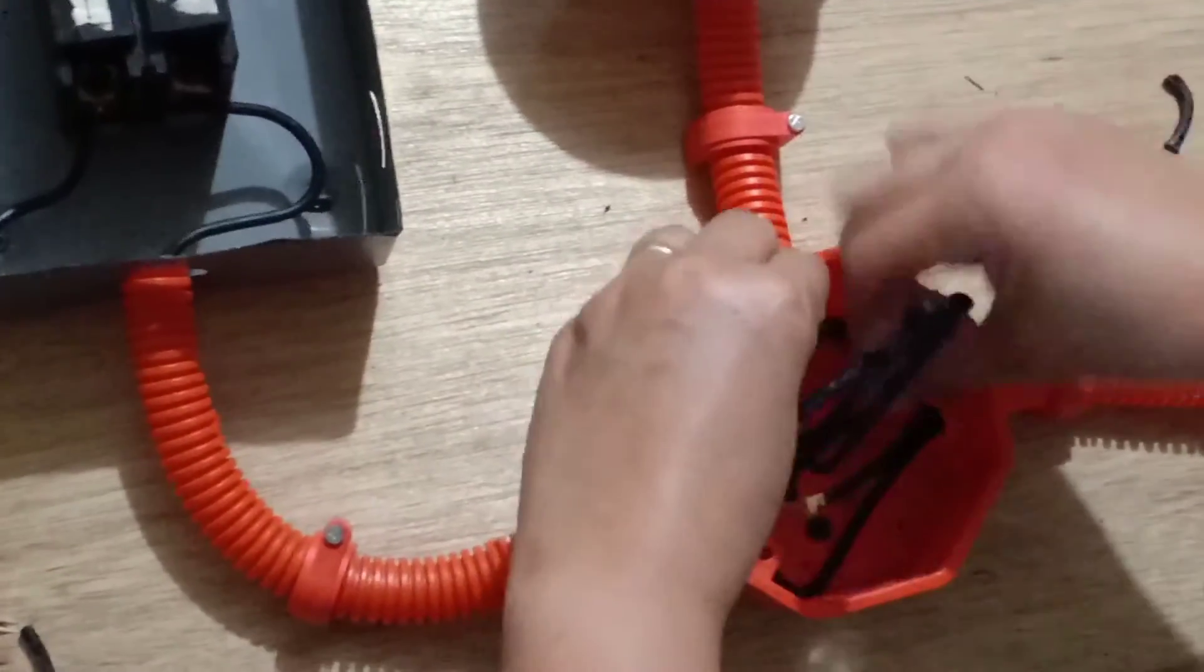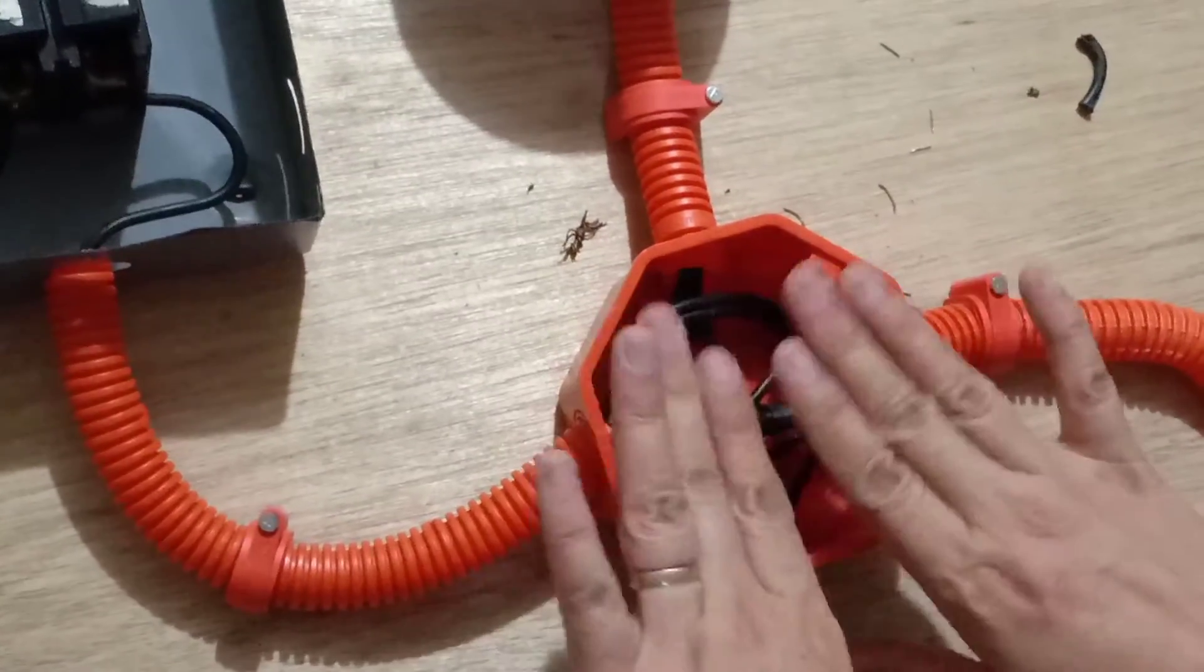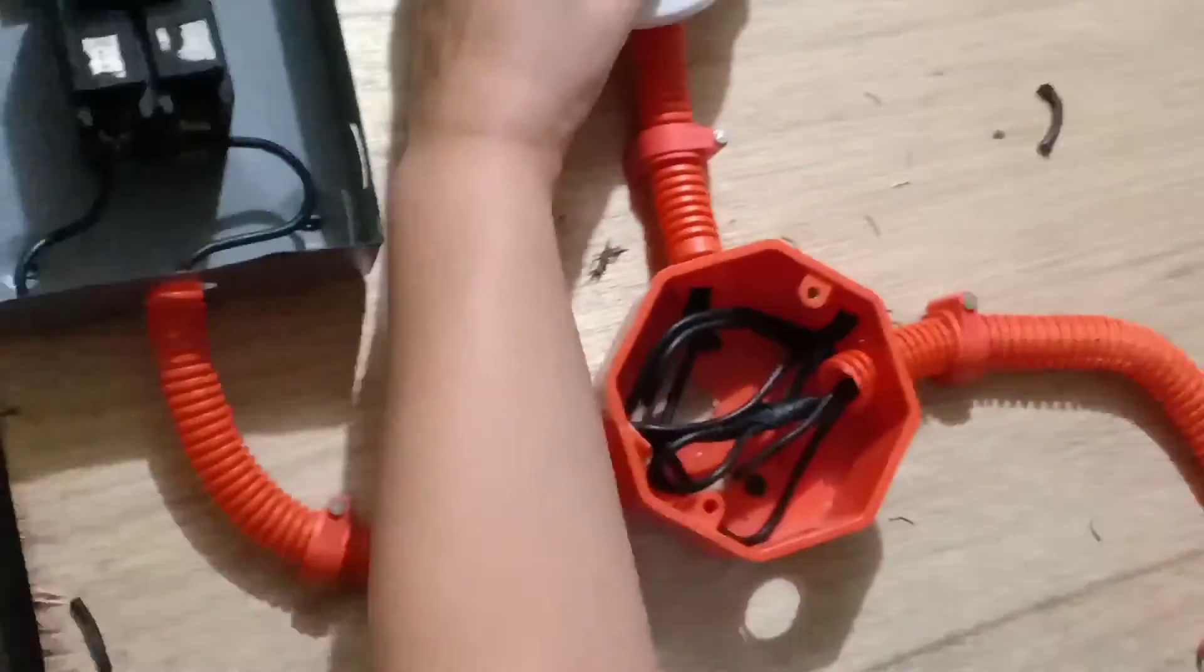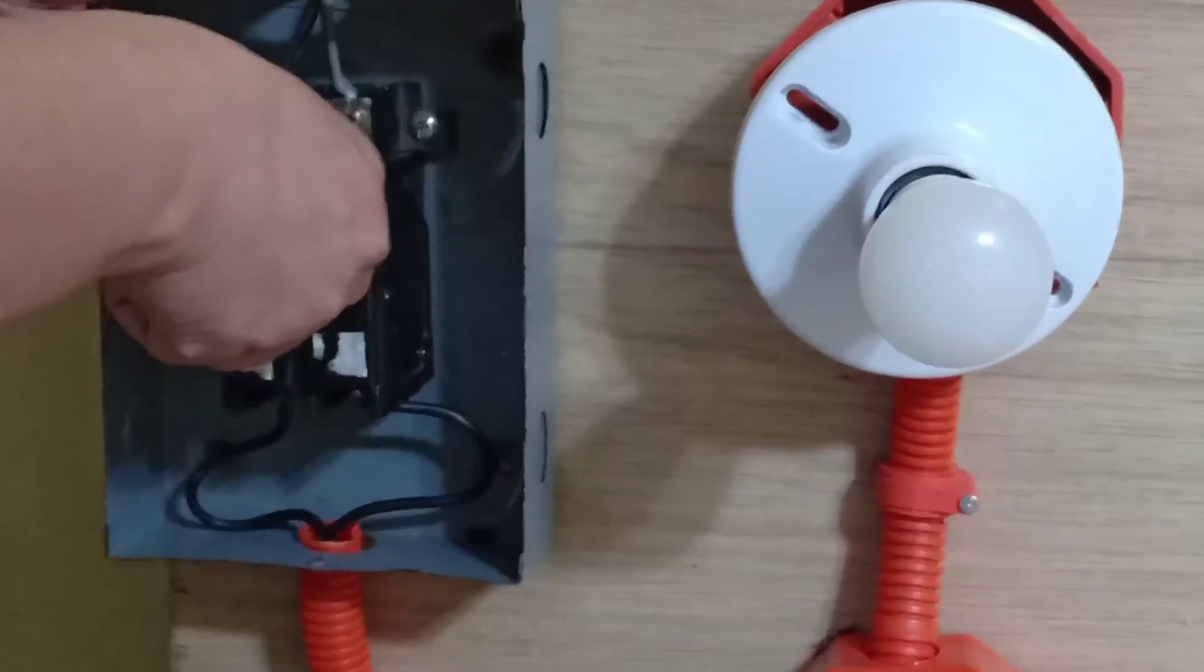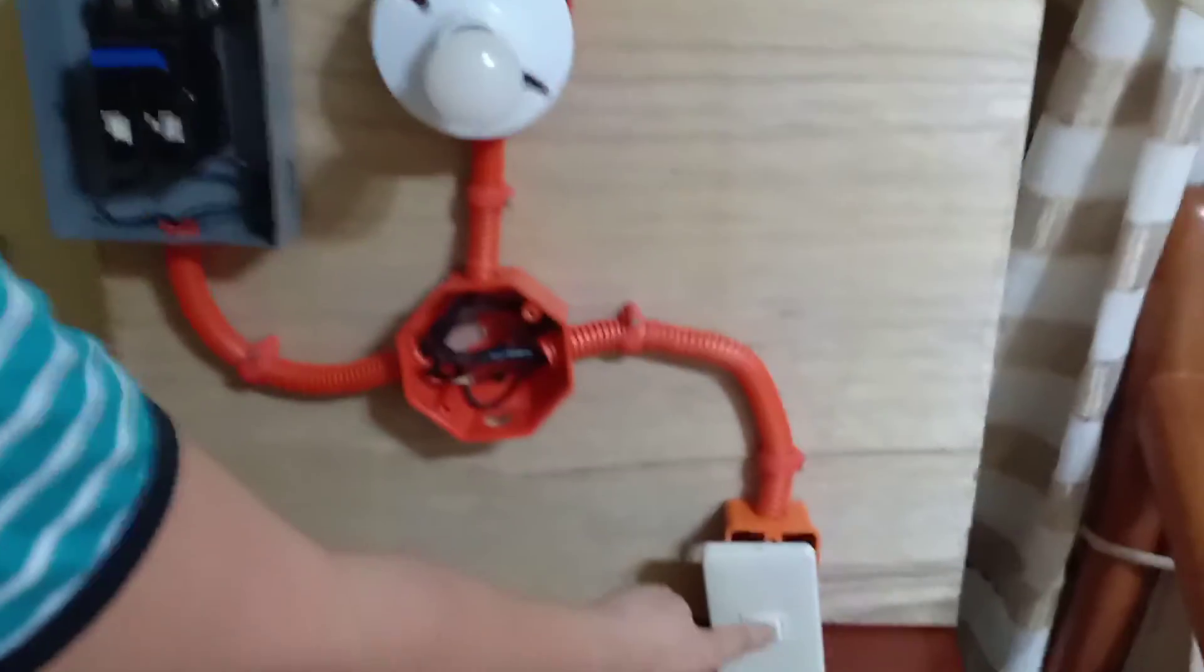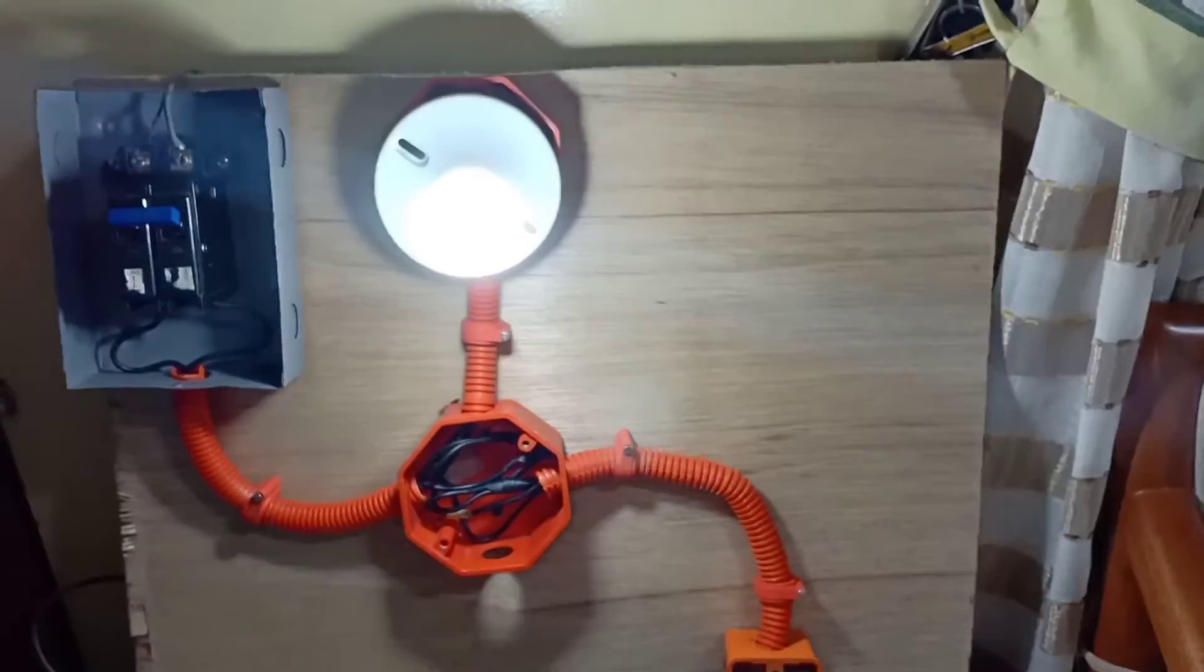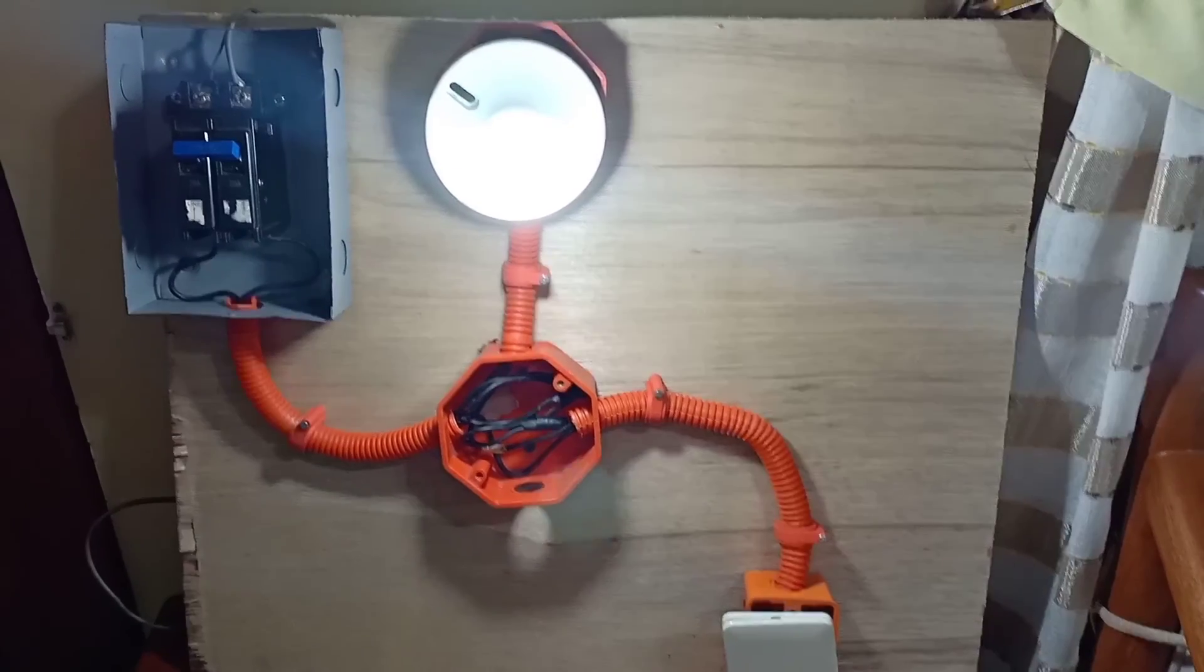Okay, so we just, we're just going to fix the wire inside and later on we are going to test our simple circuit. Okay, so we are here to test. Turn on the circuit breaker switch. Success! So now we have our simple circuit.